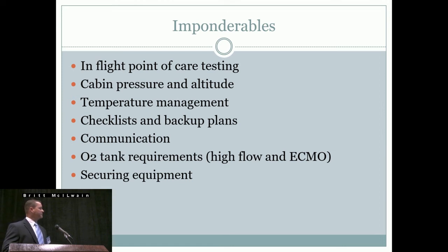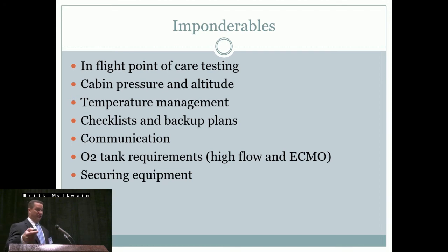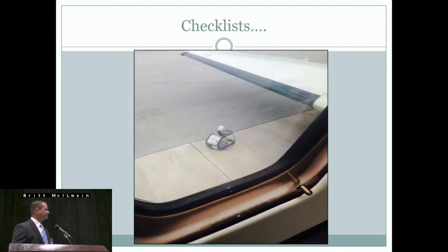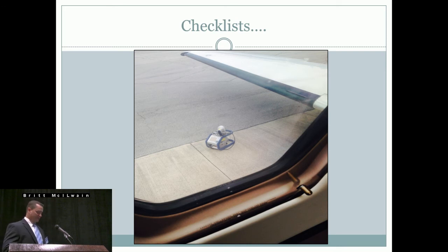Equipment security is another consideration — how many bags, how many cannulas. We're able to store some cannulas outside the cabin, so we had to figure out the temperature range in that environment and confirm that cannulas could be stored there and still be used safely. Checklists are critical, as this photo of the CardioHelp sitting on the tarmac drives home — you need checklists so you don't walk off and forget something.